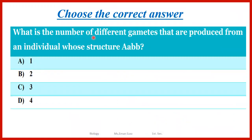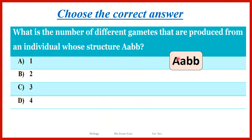What is the number of different gametes produced from an individual whose genotype is AaBb? Here we have two pairs of genes. In gametes, one gene must come from each pair. Capital A can go with small b, or small a can go with small b. There is no other type that can be formed. So we will have two types of gametes.